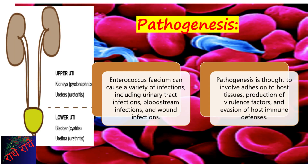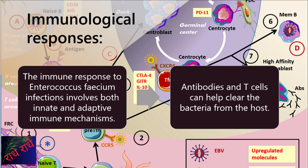E. faecium is a bacterium that can cause a multitude of infections, including urinary tract, bloodstream, and wound infections. Its potential pathogenicity is attributed to its capacity to adhere to human tissues, produce damaging proteins, and evade the immune system. Studies have demonstrated that the body's immune system plays a key role in fighting the bacteria, with both the innate and adaptive immune responses contributing. Specifically, antibodies and T-cells have been found to play an important role in clearing the infection.